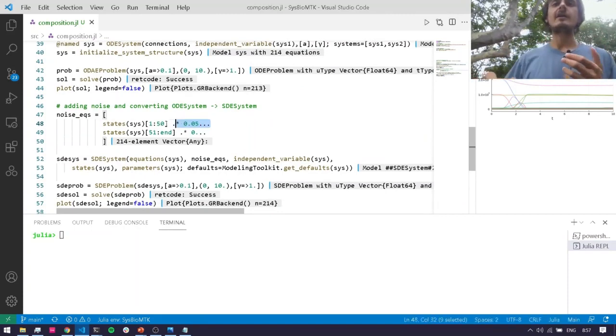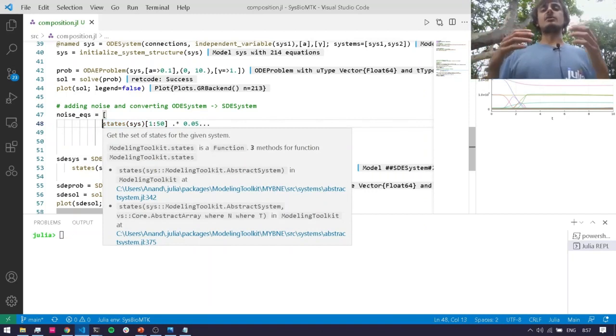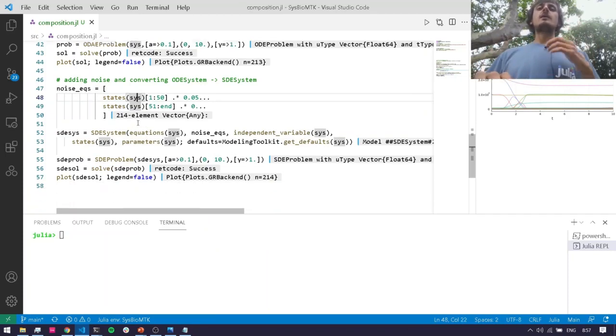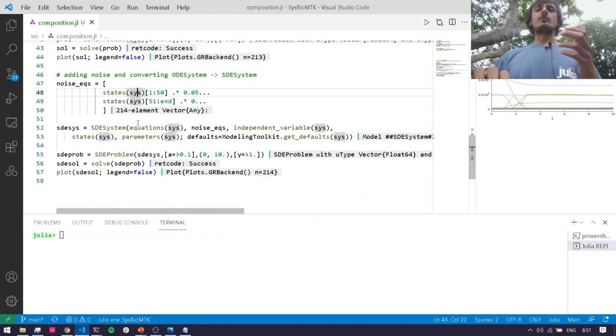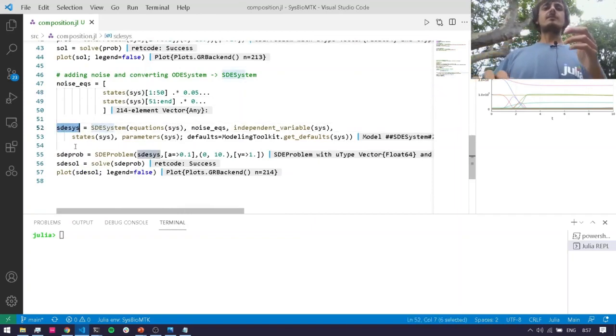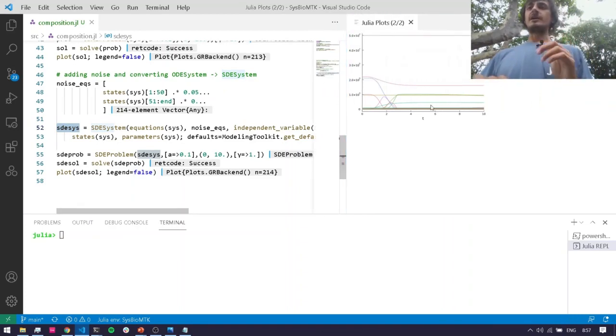Then I add five percent noise to the states of my system. This would be dependent on if you have actual understanding of your model—what kind of noise is in there, what kind of noise process underlies it. For now I'm just doing the default type of noise, which is a Wiener process, and I create a stochastic differential equation system.